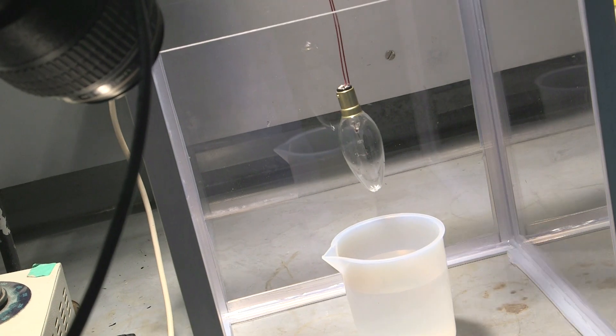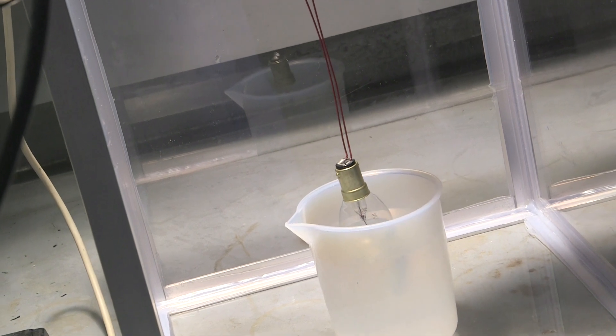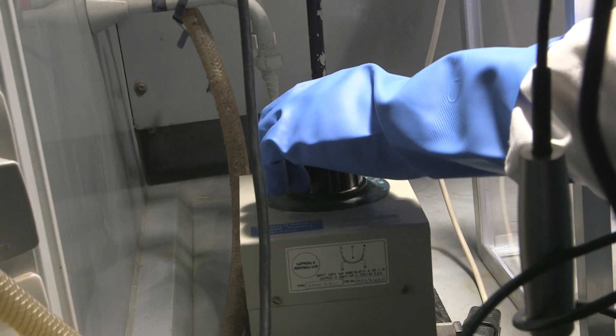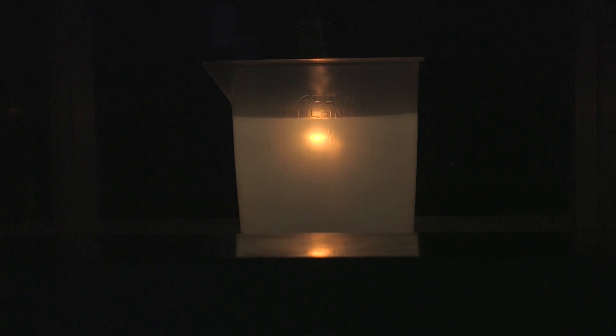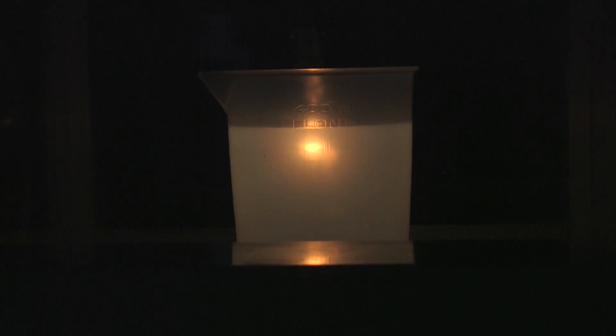I want to see what happens if we put a light bulb, an electric light bulb, the old, not energy-saving sort, into a beaker of HF. The reason why it's interesting is because HF can dissolve glass.